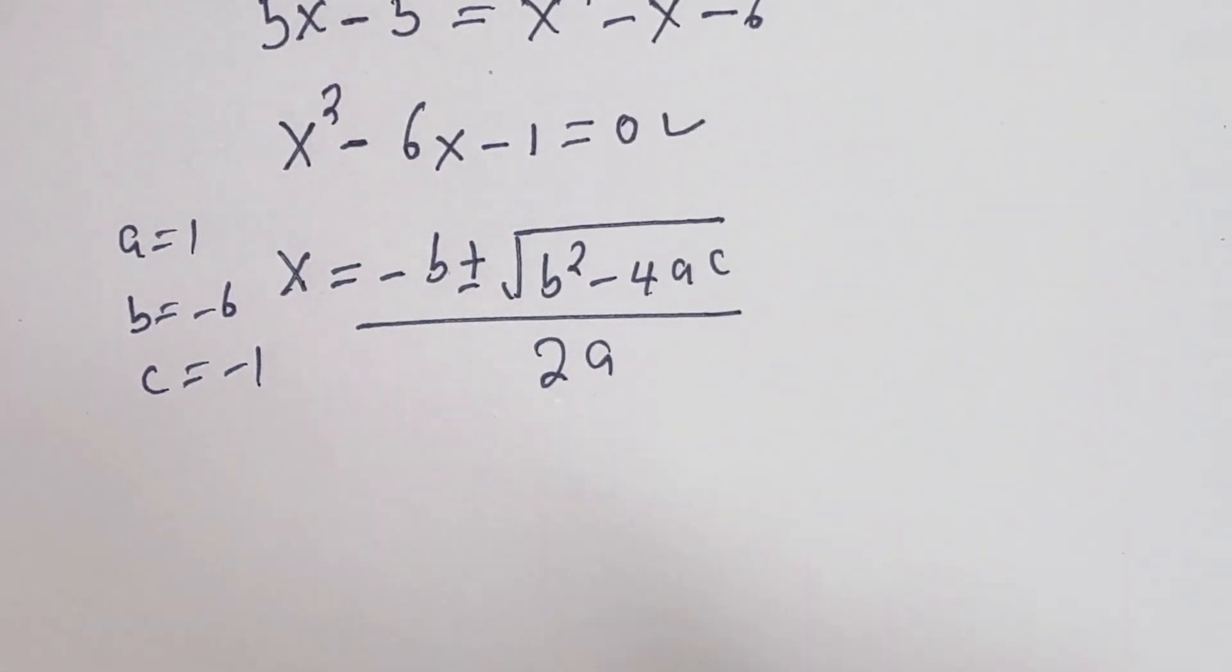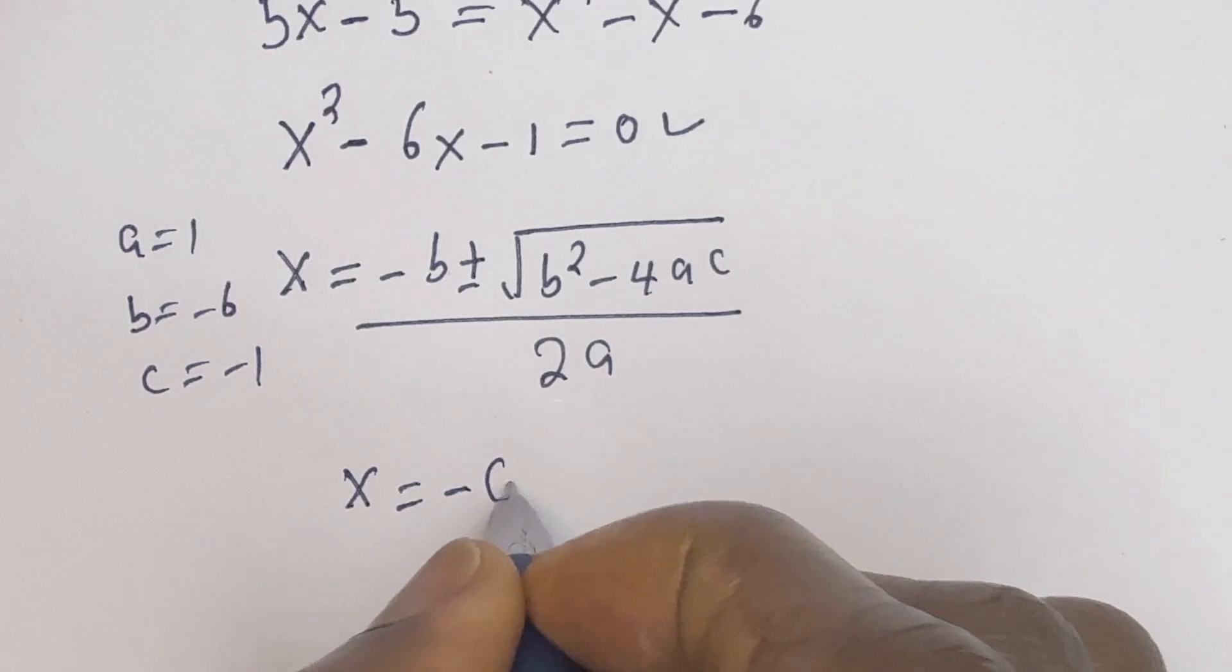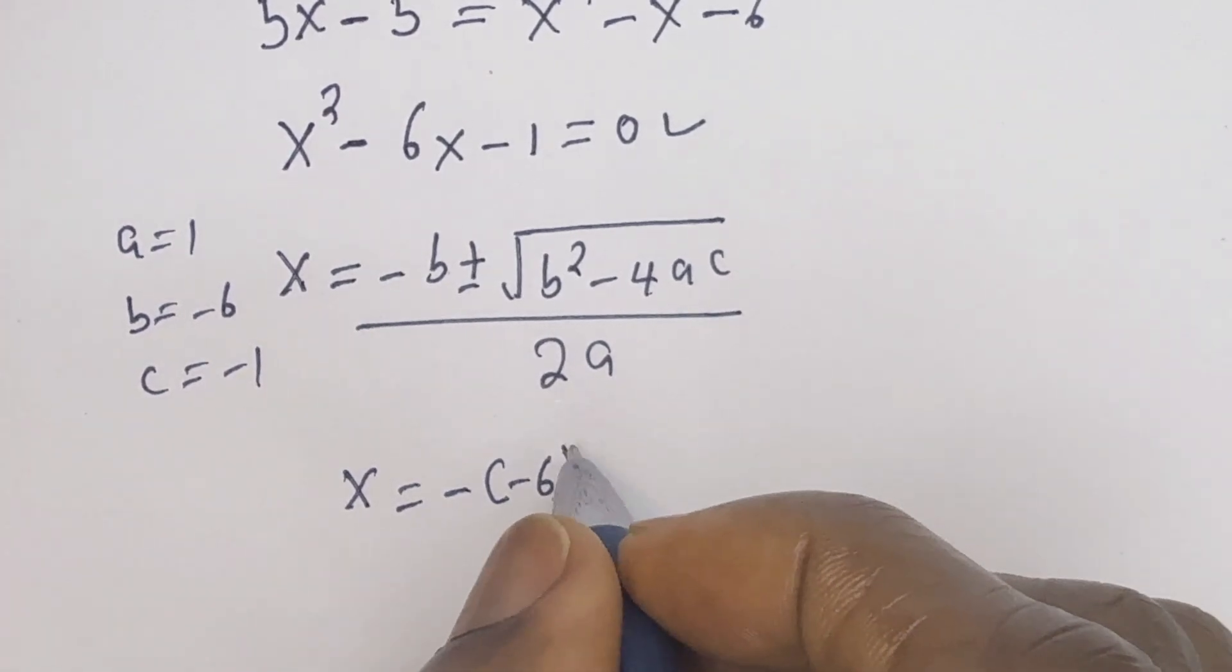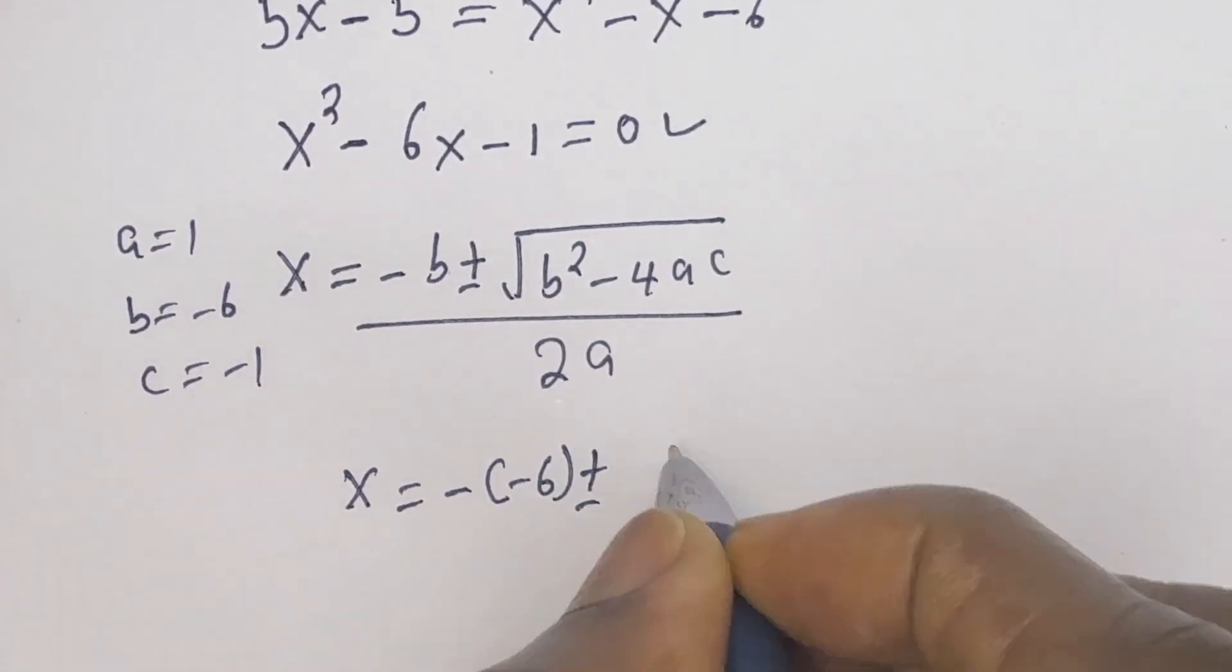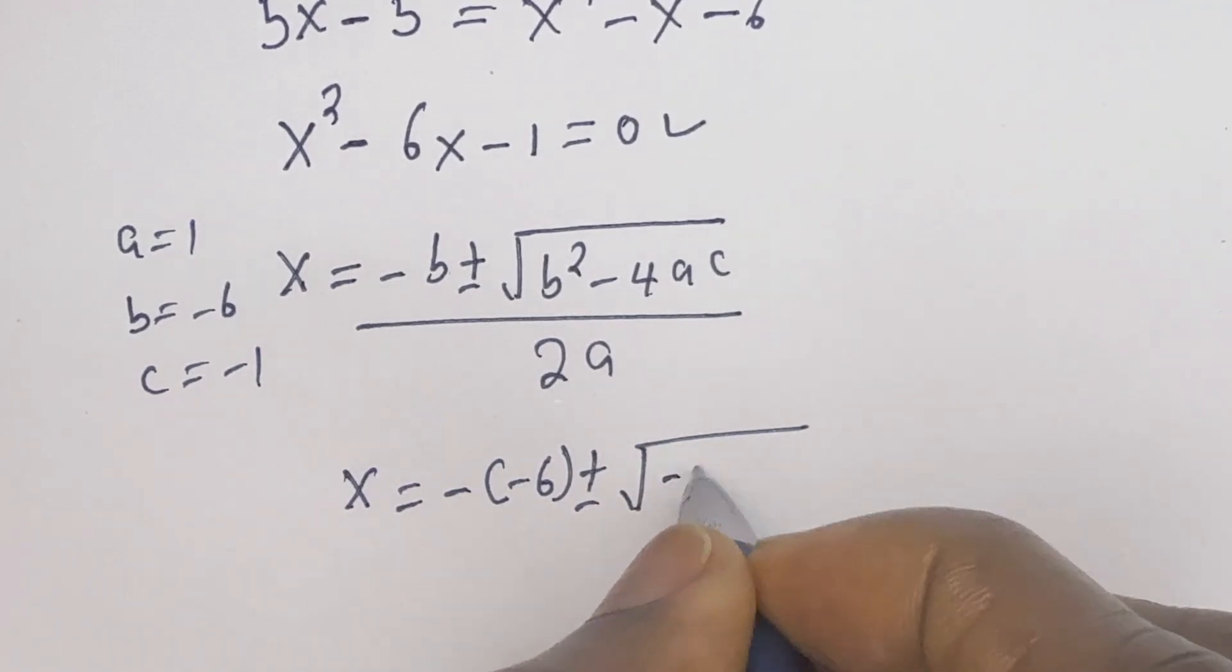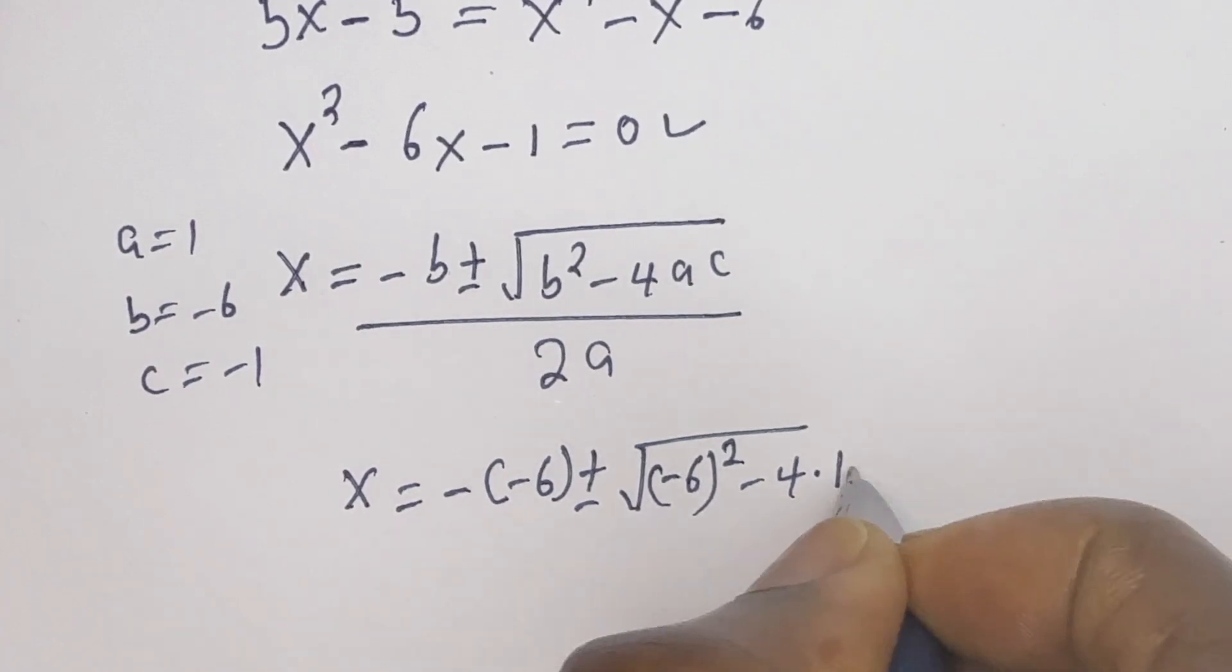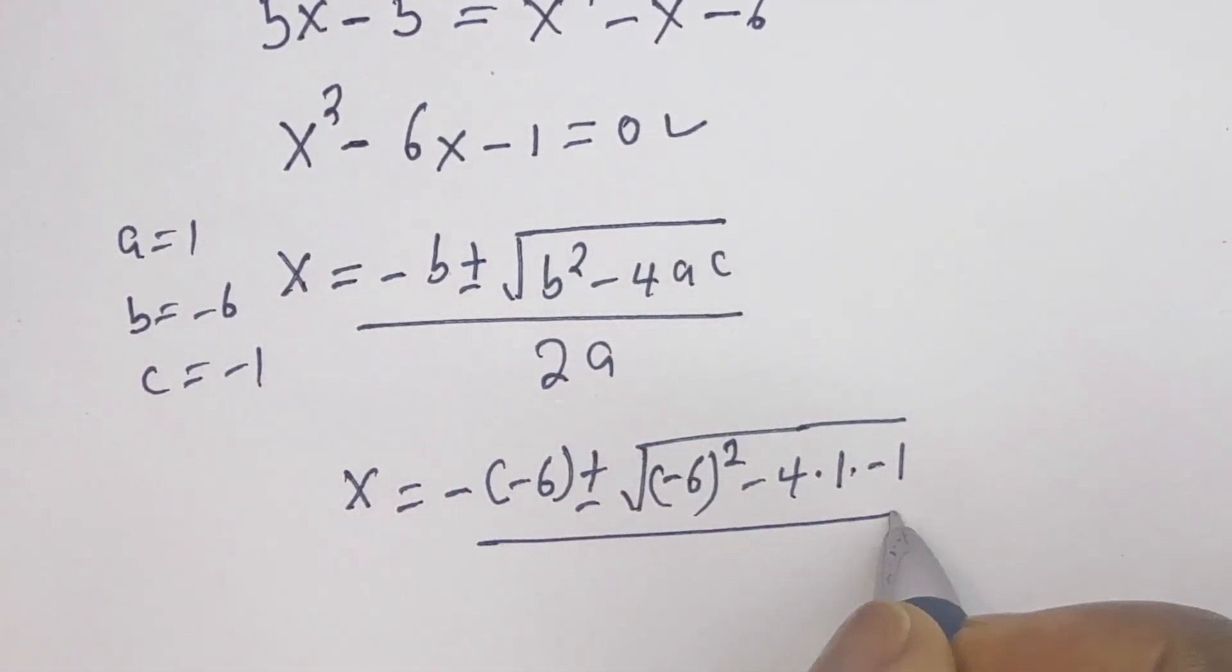Let's substitute: x is equal to minus bracket minus 6 plus or minus square root of minus 6 squared minus 4 multiplied by 1 multiplied by minus 1 divided by 2 multiplied by 1.